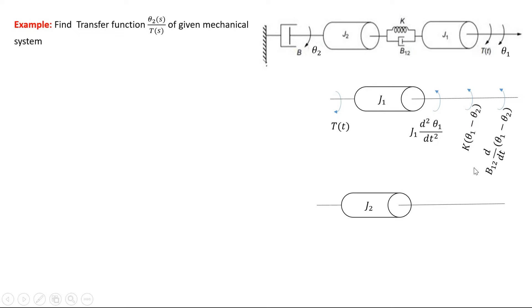For J2, there is no applied torque, so that side equals zero. The opposing torques in the anticlockwise direction include J2·d²θ2/dt² due to moment of inertia J2.